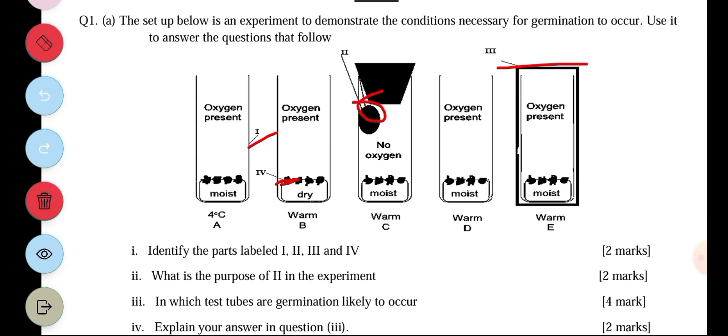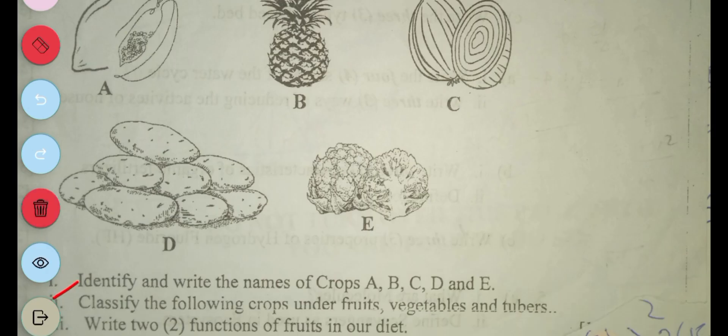That's what I explained. I said because oxygen is present, moisture is present, warmth is present, and we have viable seeds.